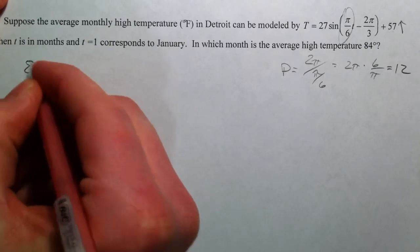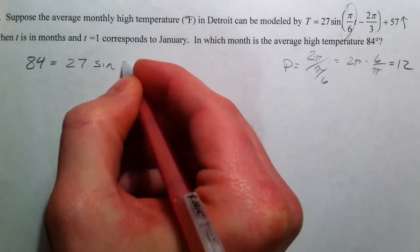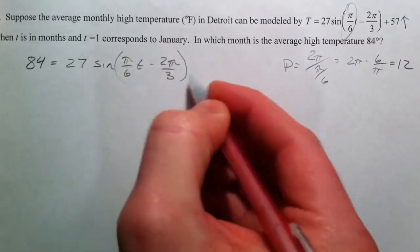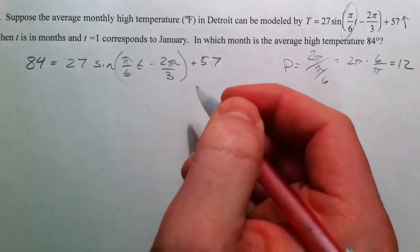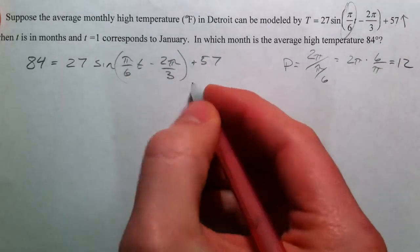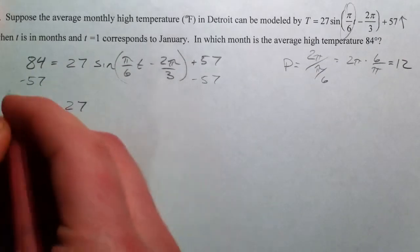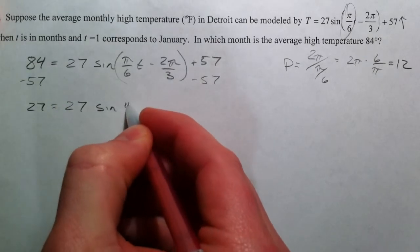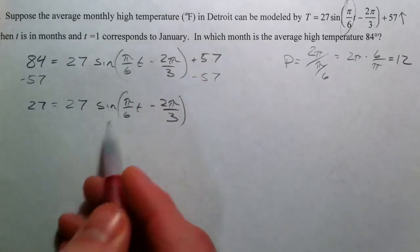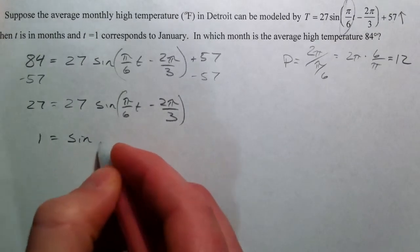We're going to solve this — we want to know when the temperature is 84, so we set T(t) equal to 84. We want to get the sine by itself. The least connected term is the 57, so subtract 57 from both sides, and you get 27 equals 27 sine of (π/6 · T). Then divide by 27.